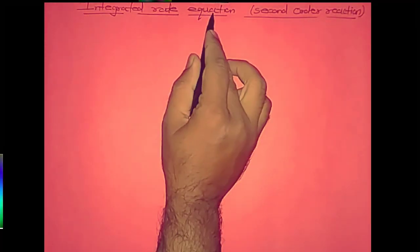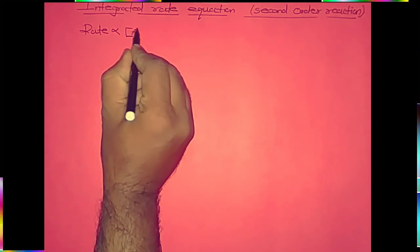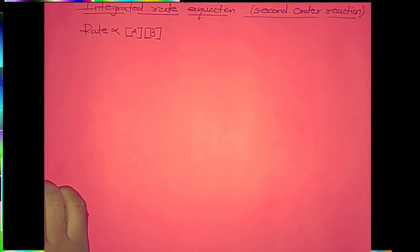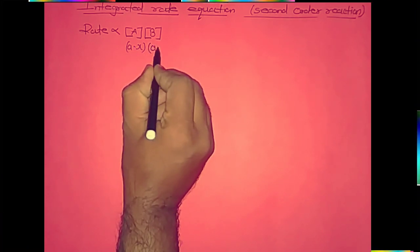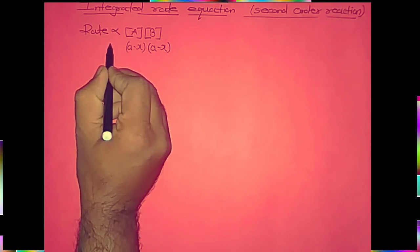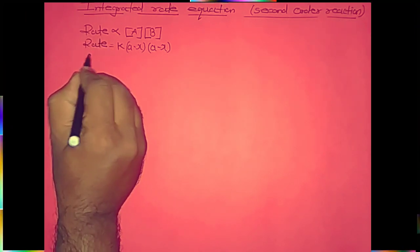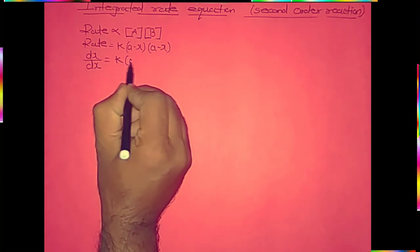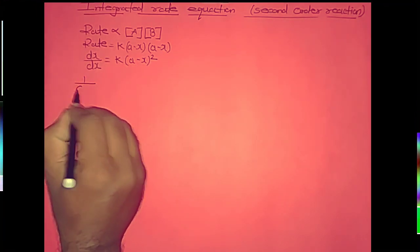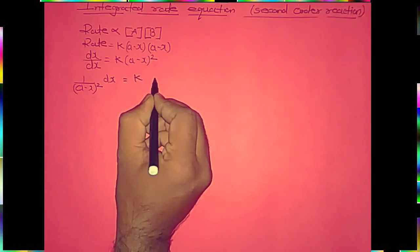For the integrated rate equation of second-order reaction, the rate is directly proportional to the concentrations of reactants A and B. Since both reactants have equal concentration, each is A minus x after time t. Removing the proportionality sign and introducing rate constant k: rate, that is dx/dt, equals k times (A minus x) times (A minus x), which equals k(A minus x)². Rearranging: 1/(A minus x)² dx equals k dt.